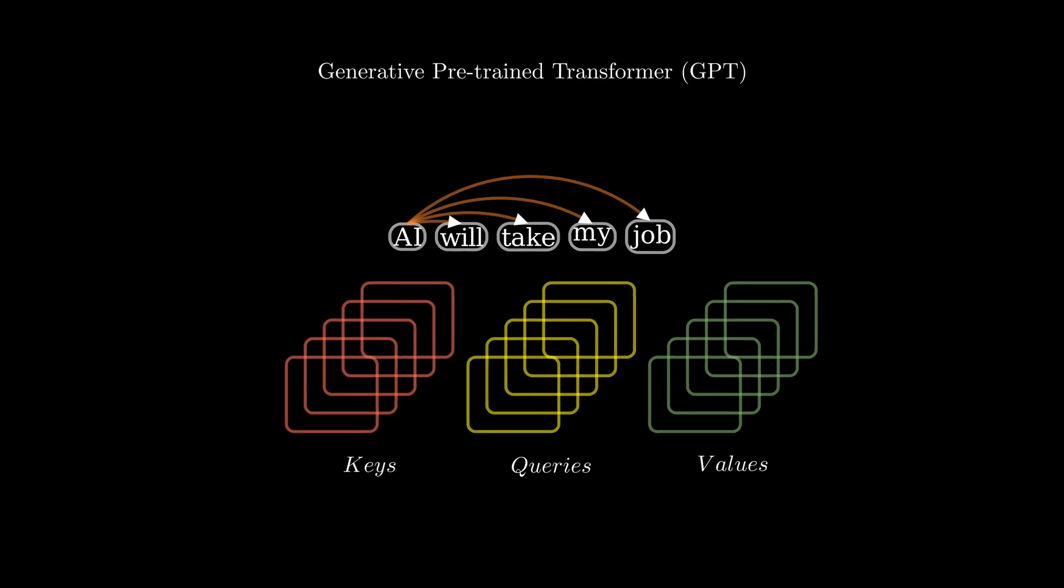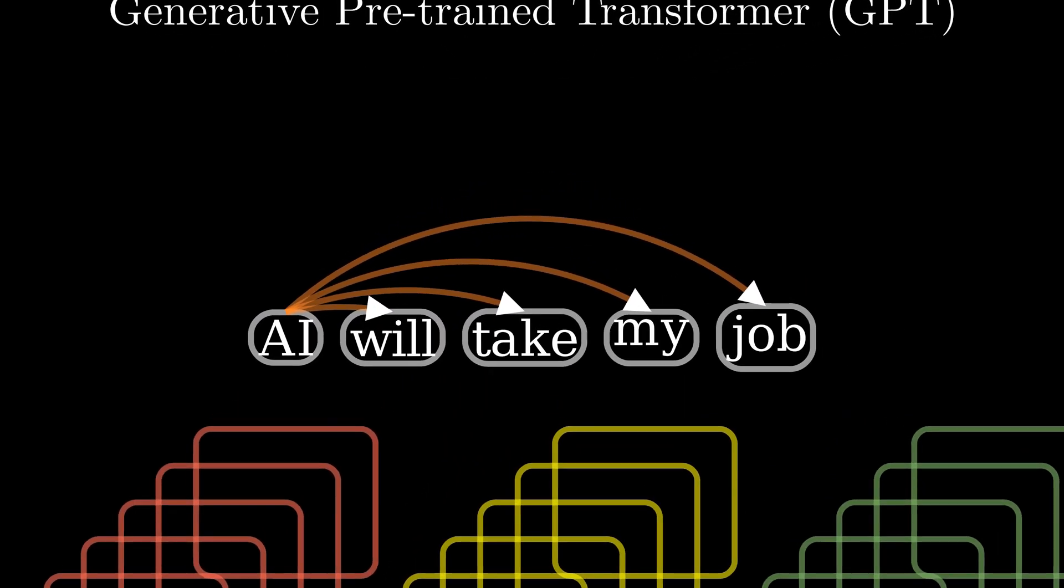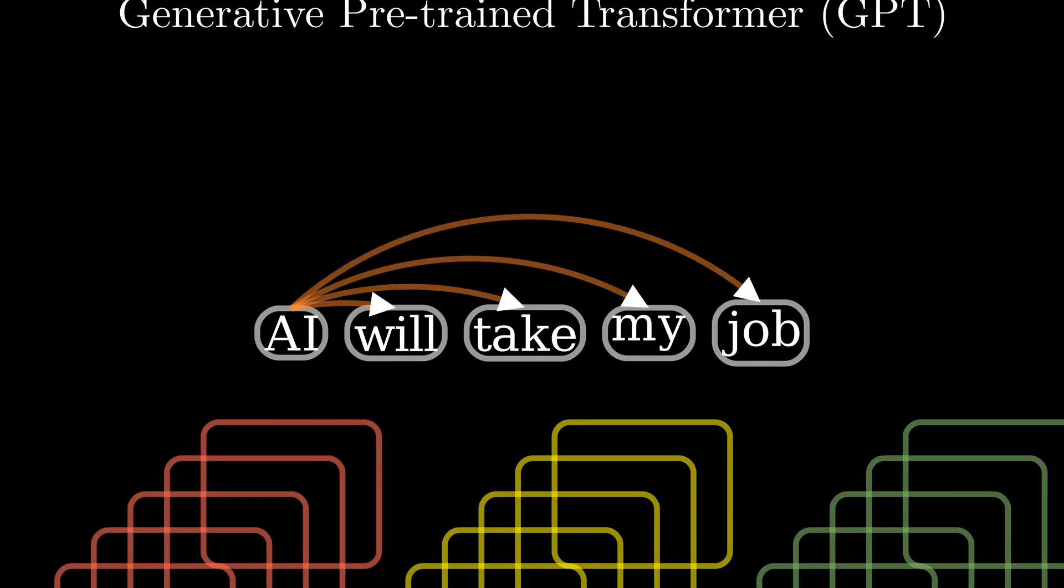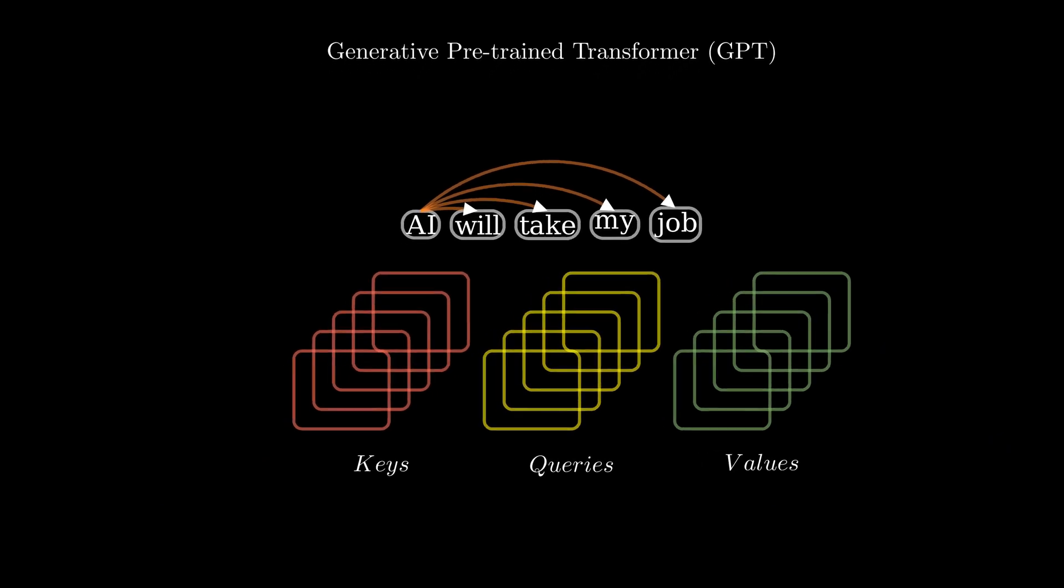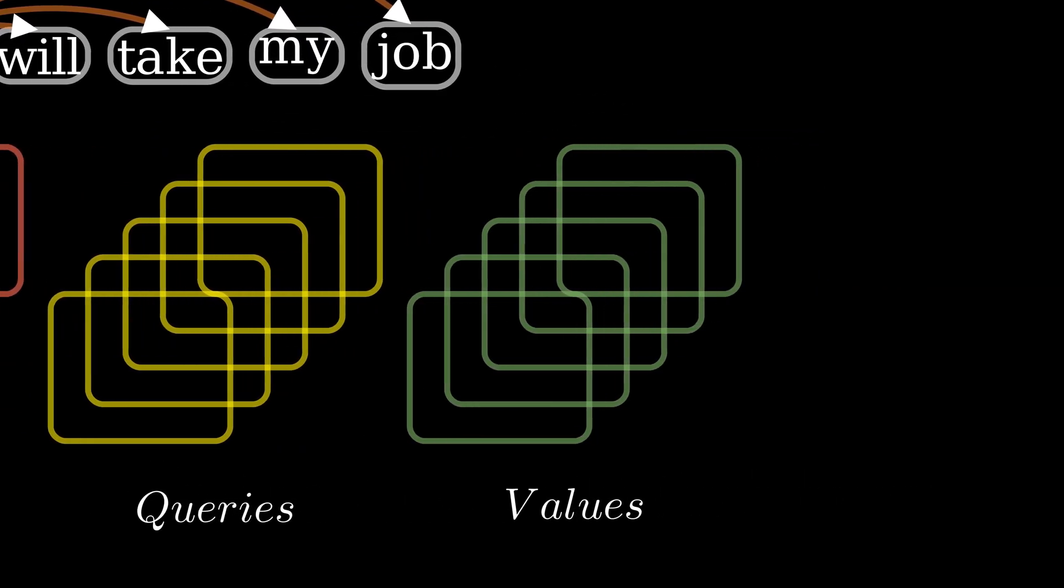Its pre-training involved predicting the next word in a sentence, allowing for the generation of coherent and contextually relevant text. GPT's innovation lay in its scale while leveraging vast datasets.